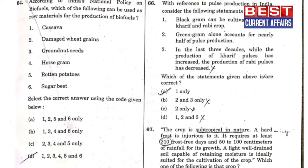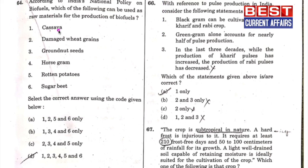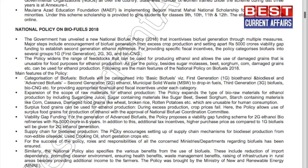We have decided to provide access to all our previous two to three years of current affairs from 2015 onwards, so that you can check all the major policies and programs of the government in previous year magazines. This question was from the National Policy on Biofuels 2018; the full explanation was in our July 2018 current affairs book, page number 15. A is the answer.